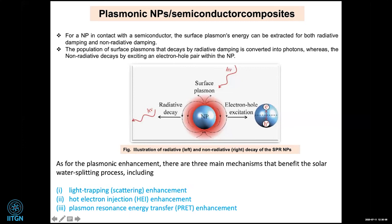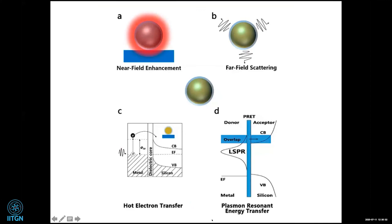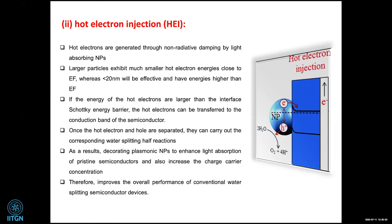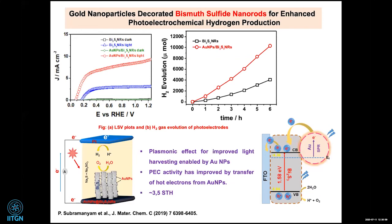The three main plasmonic enhancement mechanisms are: first, light trapping through scattering enhancement — more energy is absorbed, more solar radiation is trapped, and the effective optical path length in the semiconductor is enhanced through photon scattering back and forth. Second, depending on particle size, hot electron injection. Third, plasmon resonance energy transfer (PRET). Gold nanoparticles are particularly advocated for this. For example, with Bi2S3, when you put gold nanoparticles of around 8–10 nanometers, you can see a combined plasmonic effect along with improved efficiency.